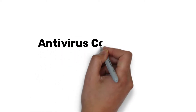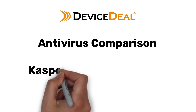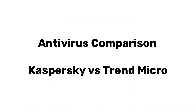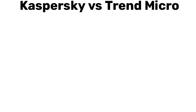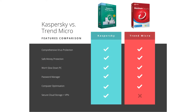Hi everyone, it's Winston here from Device Steel. Today we'll be comparing two of our top selling antivirus products, Kaspersky Total Security and Trend Micro Maximum Security. If you're looking for an antivirus solution but don't know which one to choose, this video would be a great starting point. We'll go over the features, benefits and differences between the two and hopefully help you choose the right one for you. Let's get started.